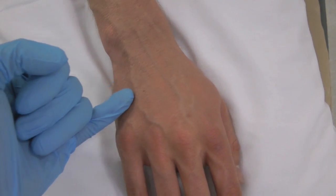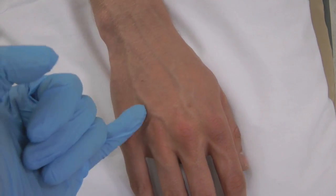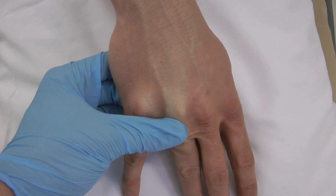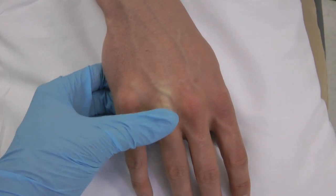Veins on the dorsum of the hand are great for cannulation. They are easily visualized when looking for signs of infection, they are accessible and they won't interfere with the patient's movements.